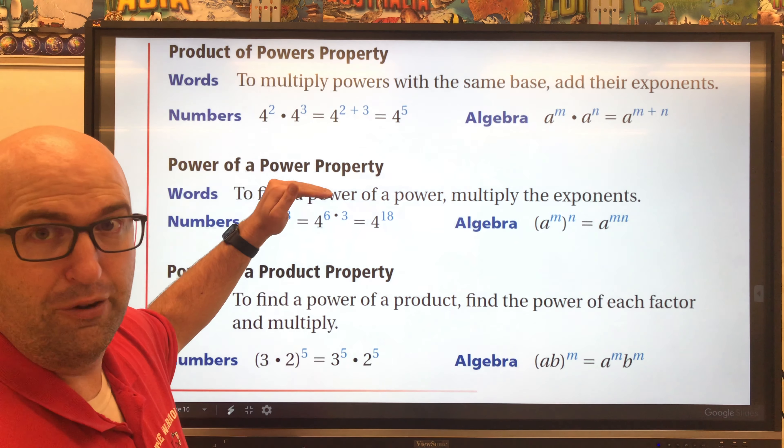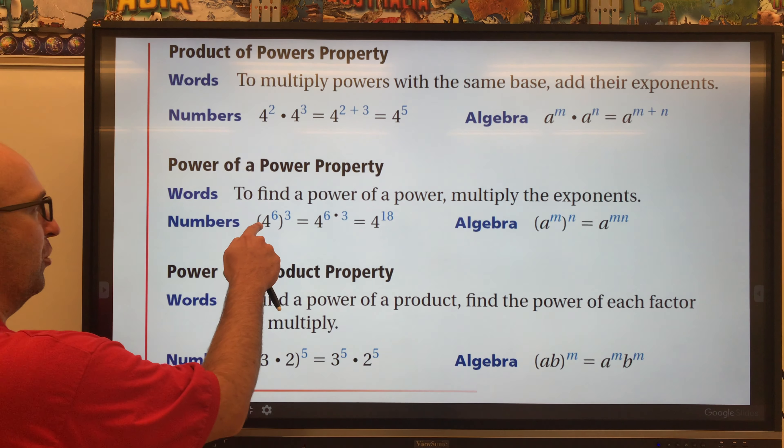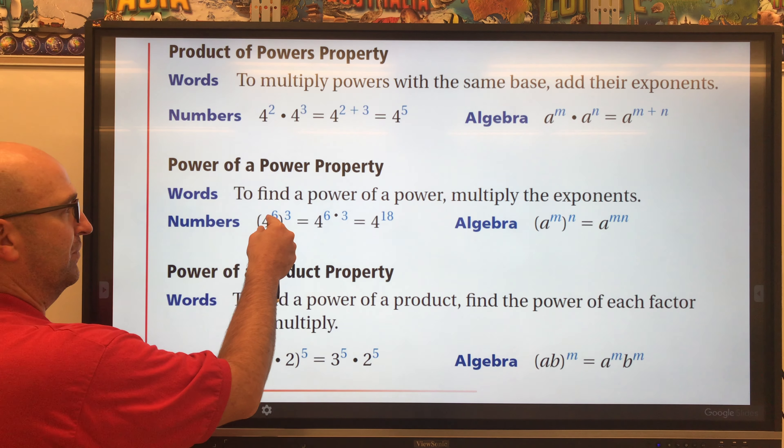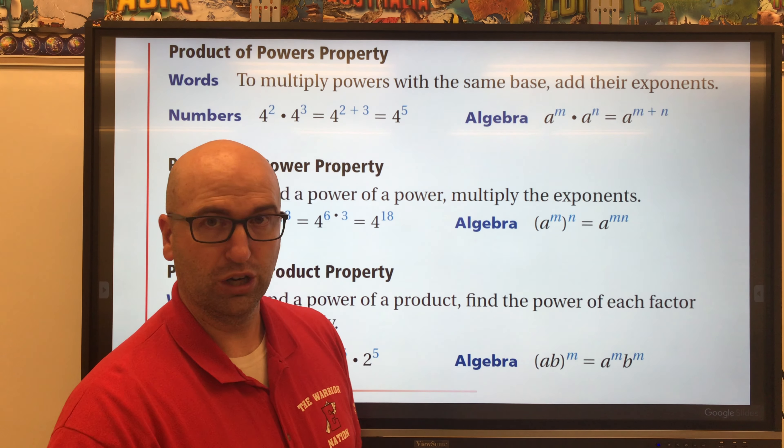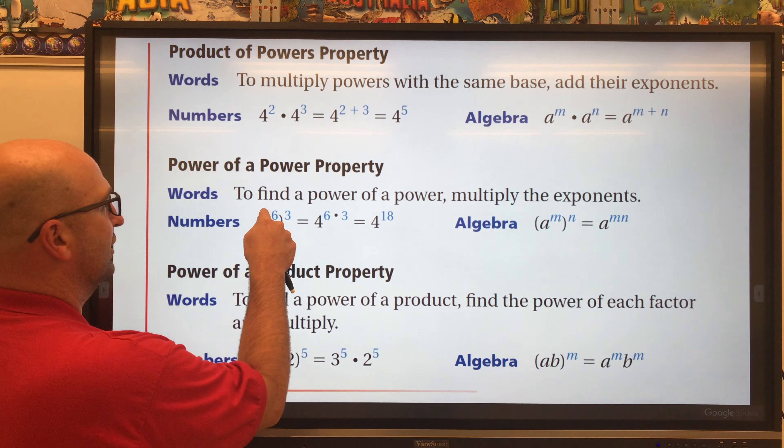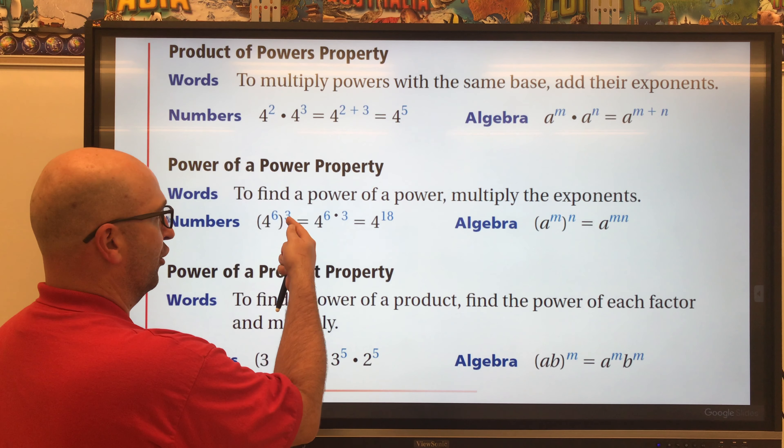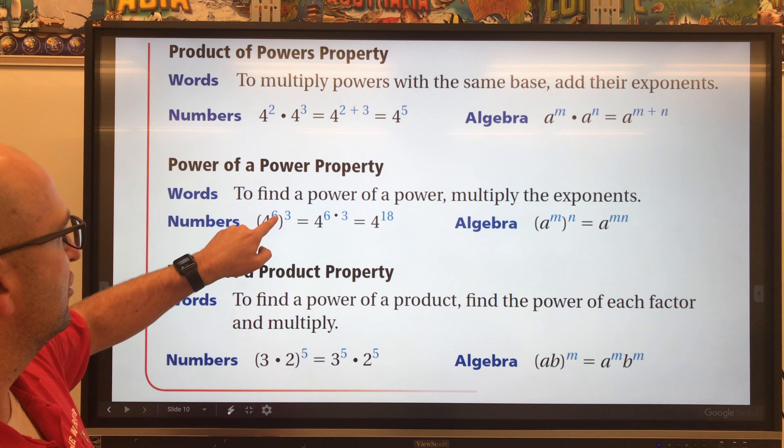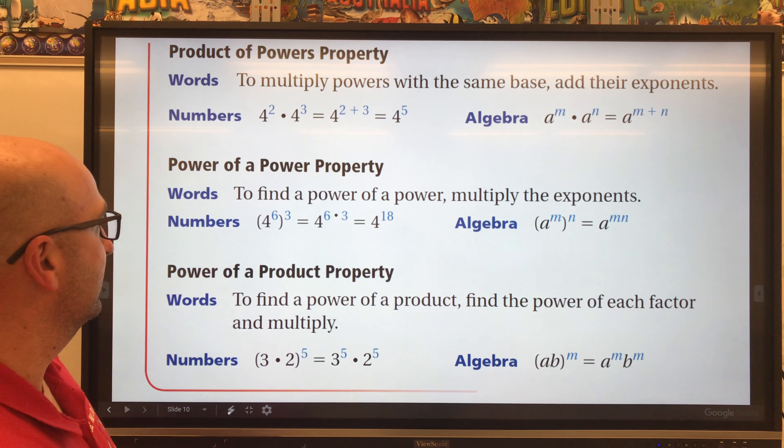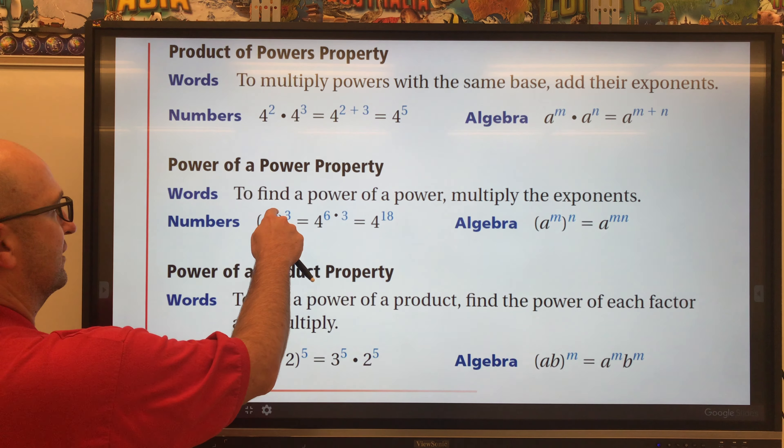The Power of a Power Property is where you have an exponent, but then you have that exponent itself have a power to it. So it's four to the sixth to the third power. When you have something like this, usually separated by parentheses, four to the sixth to the third, those numbers you're not going to add like up here.